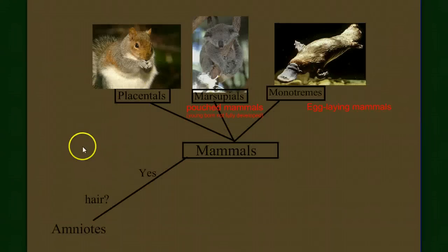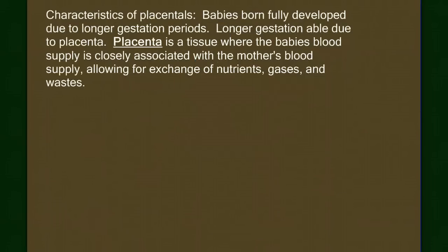Now we move on to the placental mammals. In placentals, babies are born fully developed — they have all their parts and are ready to go, though they may not yet be able to care for themselves. The key to that is the structure of the placenta, so we need to discuss what the placenta is and what it's doing that the other mammals don't have.